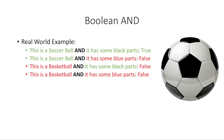Here's an example with a little soccer ball. We have condition statements saying this is a soccer ball AND it has some black parts. Well, both of those are true, so the whole thing is true. Now if we said this is a soccer ball AND it has some blue parts — no, that's false because it is a soccer ball, that part is true, but it doesn't have blue parts. So this is a soccer ball AND it has blue parts — false. This is a basketball AND it has some black parts — that's false. This is a basketball AND it has some blue parts — still false.